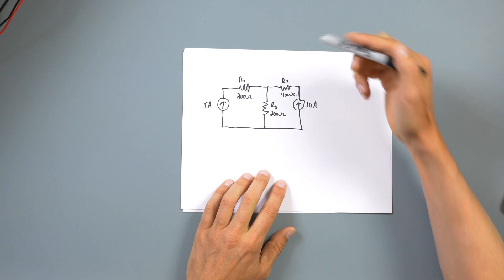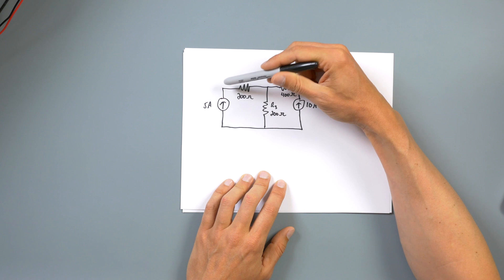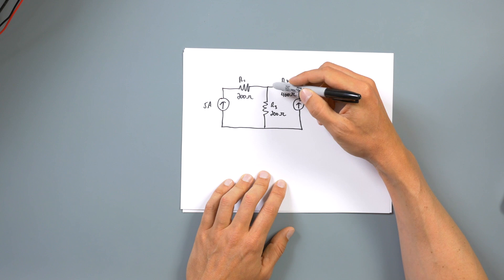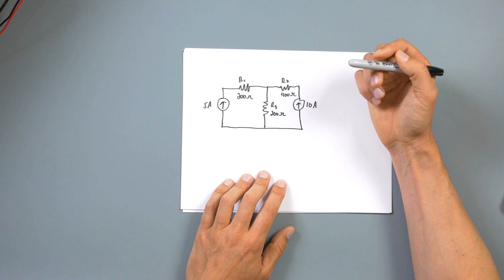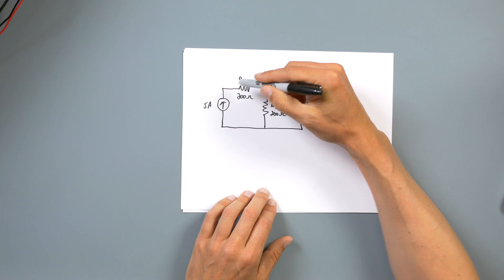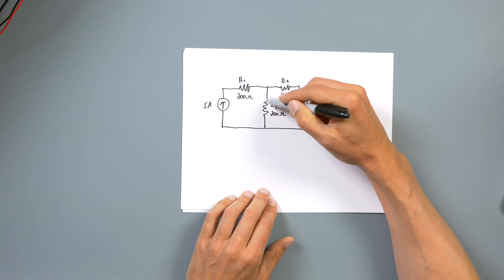As we look at this one, we see we have three resistors and two current sources. Since this current source is in series with that, and this current source is in series with that, we don't really need to calculate anything at those nodes. The only node we really need to worry about is this one in the middle. Since the currents are flowing that way, we can assume the current flows this way for R1, this way for R2, and this way for R3.